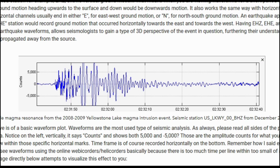An earthquake appearing on, for example, an EHE station would record ground motion that occurred horizontally towards the east and towards the west. Having EHZ, EHE, and EHN stations when viewing earthquake waveforms allows seismologists to gain a type of 3D perspective of the event in question, furthering their understanding of how the seismic waves propagated away from the source.